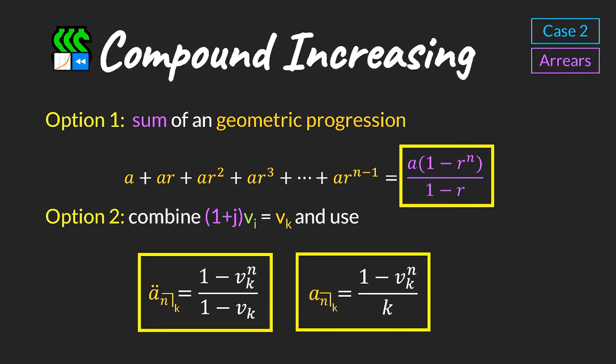So when we have a compound increasing annuity we have two options to calculate the present value: either use the geometric progression formula, or combine the increase factor and the discount factor to create a new discount factor vₖ and then use the usual annuity formula accordingly.